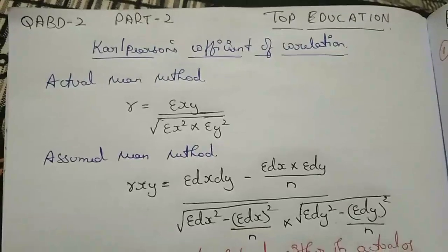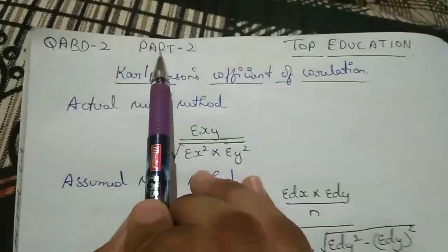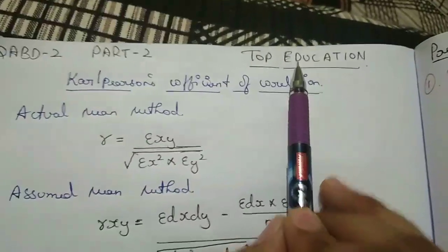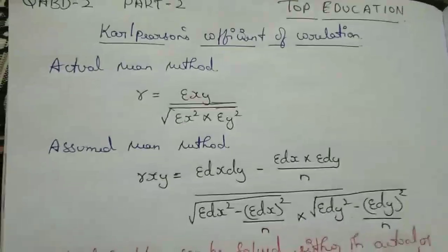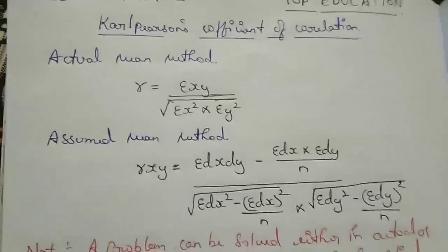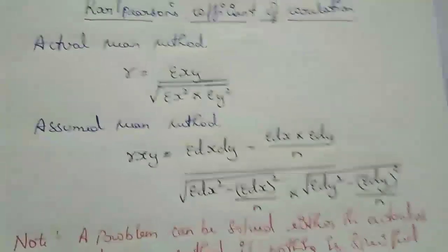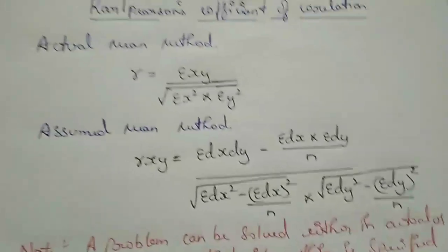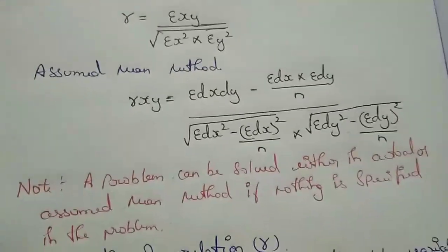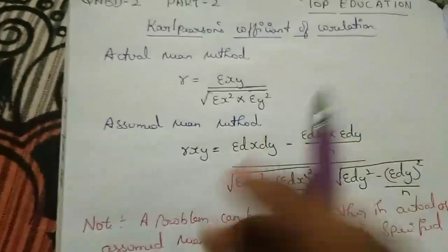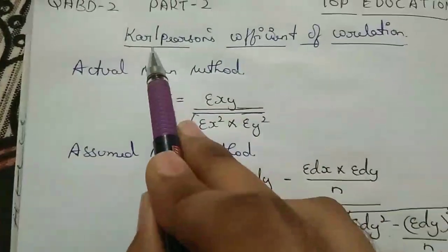Welcome to Top Education. In this session we are doing QA BD 2, Part 2, from Top Education. There are two methods in this chapter, which is the first chapter on correlation and regression analysis. We are doing separate videos so you will be able to know everything. In this video we will learn about the actual mean method of Carl Pearson's coefficient of correlation.